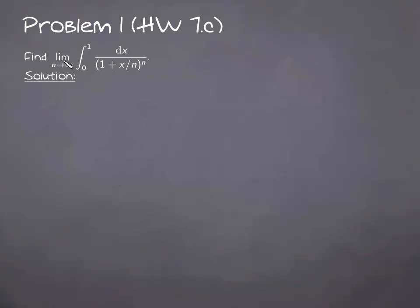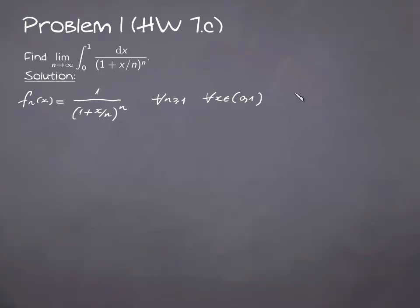Clearly we would like to pass the limit under the integral sign, and to do that we can use one of the theorems. First let's analyze the integrand. We define the function fn of x as the ratio 1 over (1 + x/n) to the power n. Clearly, for every n and for every x from the interval 0 to 1, this function fn(x) is non-negative and also bounded above by 1.